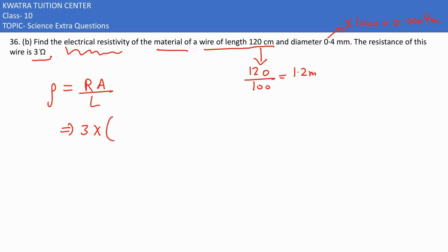Put 3 in place of R. For area, you have to put πr². That's 3.14 into radius squared. If diameter is 0.0004, then radius would be half of it, 0.0002 meters. So put it here, take the square of this value, and divide it with the length of 1.2 meters.